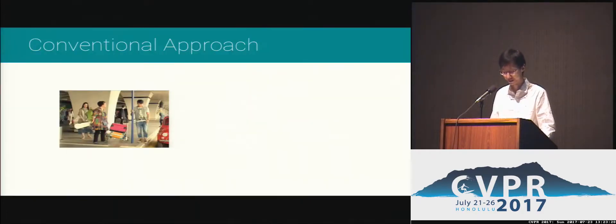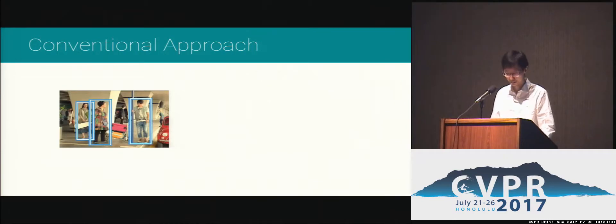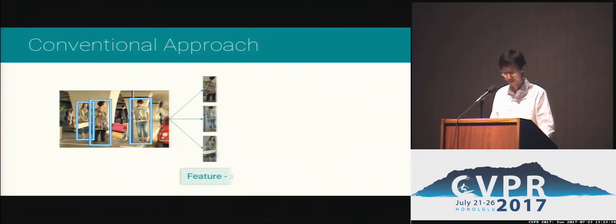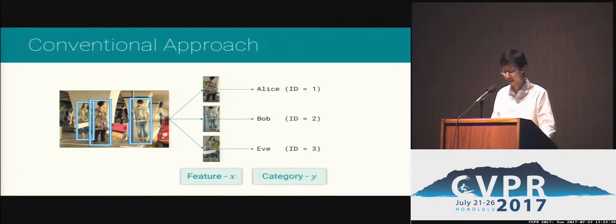Given a scene image, the conventional approach would be first detecting the people inside the image, then extracting the feature for each person, and at last classifying them into different categories with, for example, a Softmax classifier.